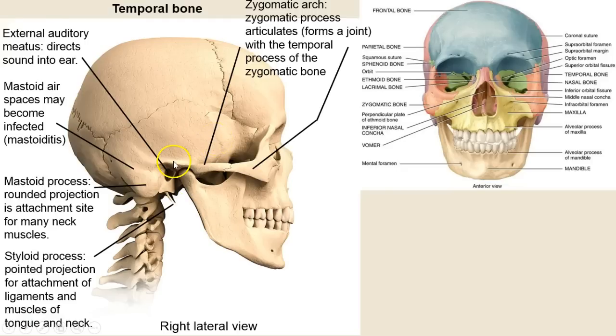The zygomatic arch — this is just part of the zygomatic or cheekbone. The rest of it is going to be formed by the next level up, close to the face.